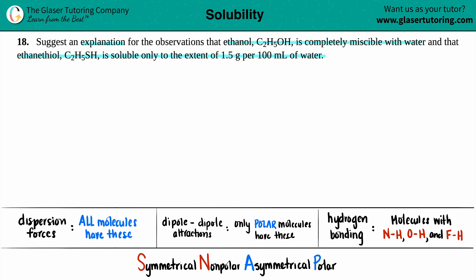We basically have two compounds here being dissolved in water. We have ethanol, C2H5OH — that's drinking alcohol — and then we have ethane thiol, C2H5SH. It's remarkable that changing only one element, swapping oxygen for sulfur, results in completely different solubilities, even though all other elements and the general structure are the same.